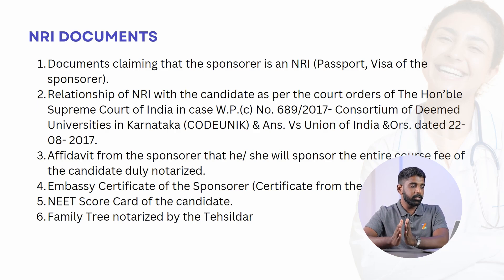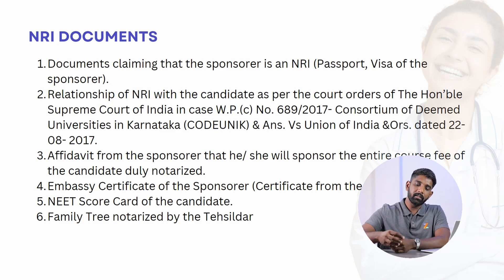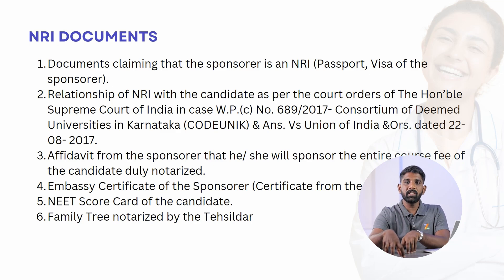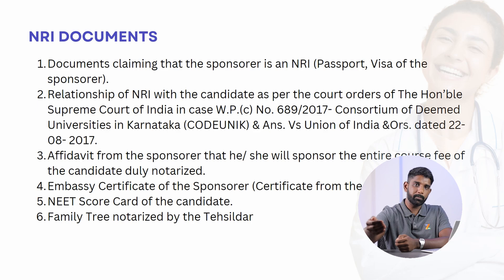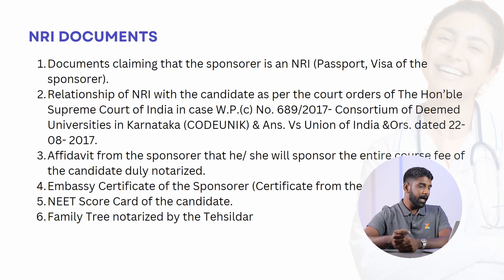Now let's look at the NRI documents required. The first document is a certificate proving the sponsor is an NRI — whoever is sponsoring you, whether uncle, grandfather, or cousin, you need to produce this certificate. The second document is a relationship certificate between the sponsor and the candidate. For example, if your cousin is sponsoring you, you must produce a certificate confirming they are your first-degree cousin.